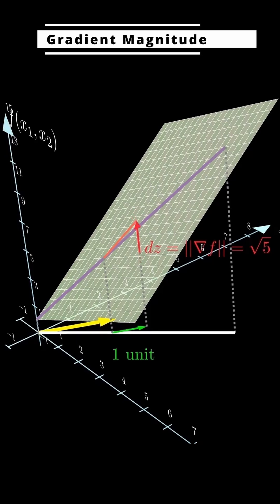It's not that the whole plane is tilted by the square root of 5. It's that in this special direction, f increases at the square root of 5 per unit step.